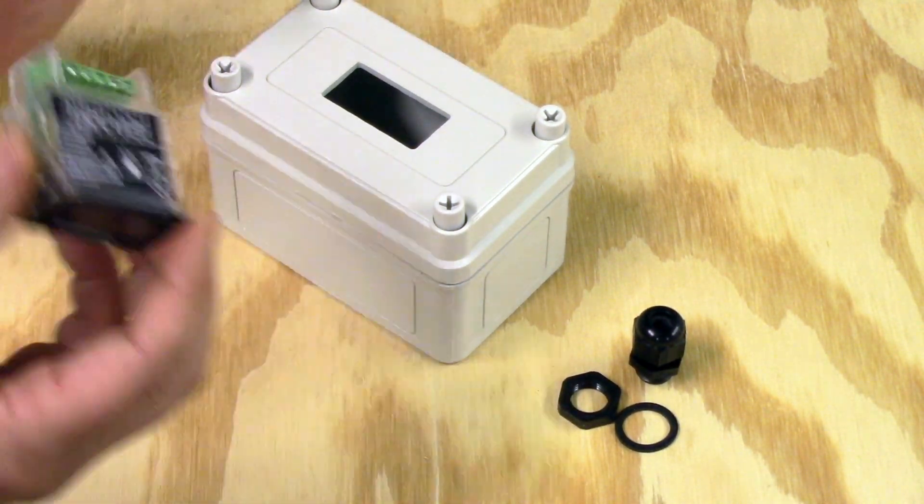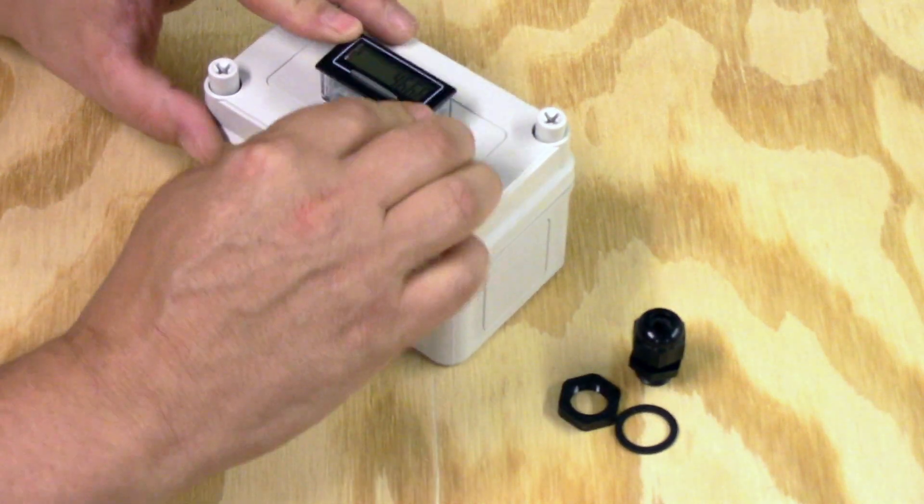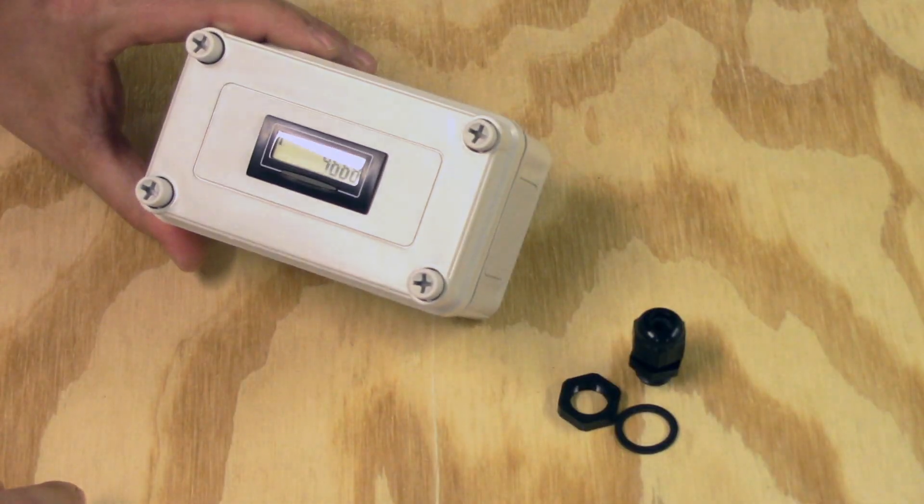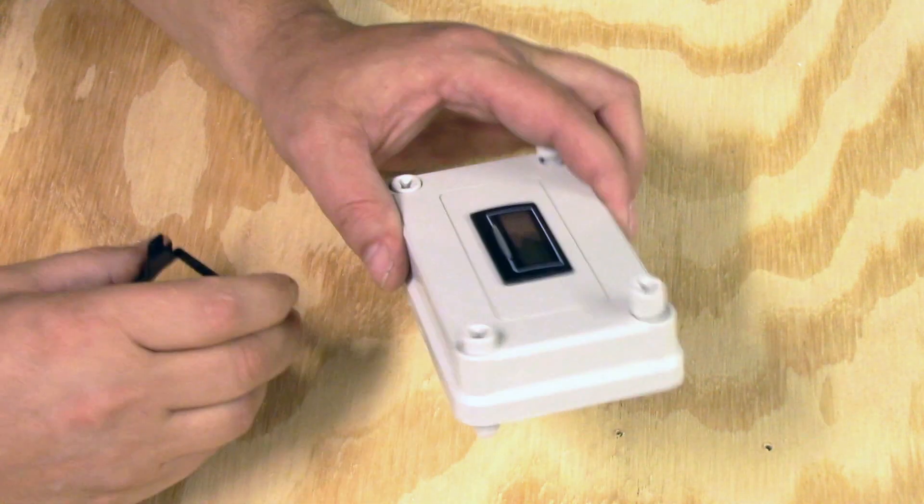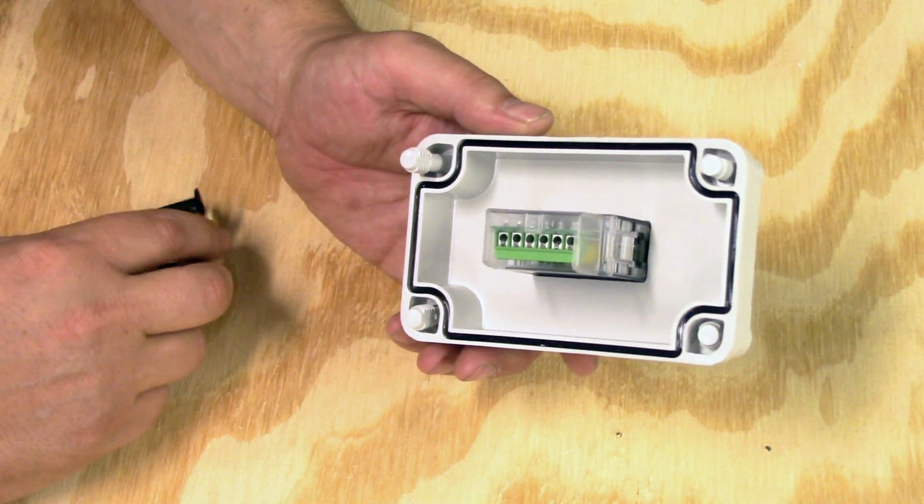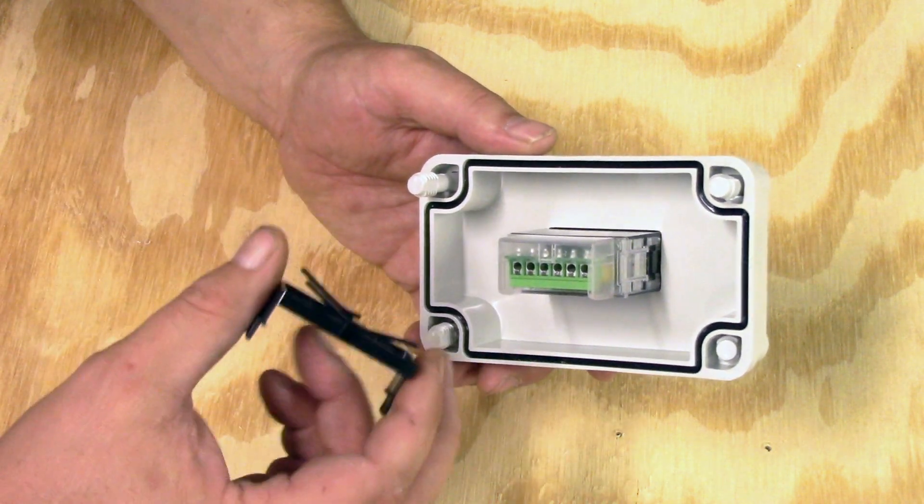And the display here simply pushes in and fits right in there. It's perfect size. And then once the unit is installed into the face of the box you need to lock it in there with this locking clip.